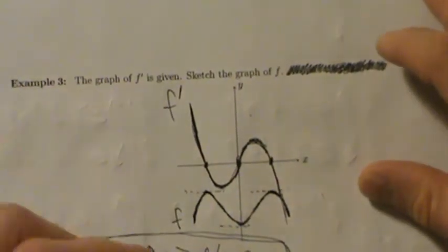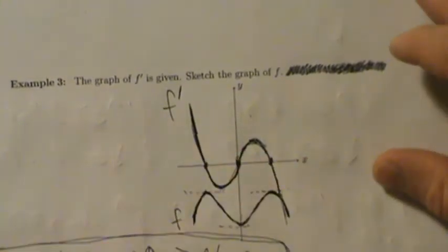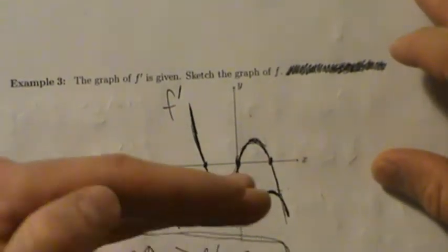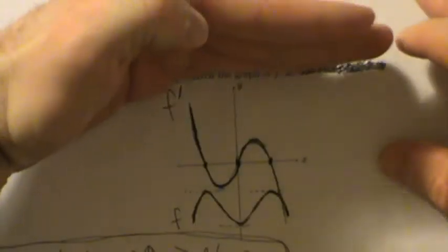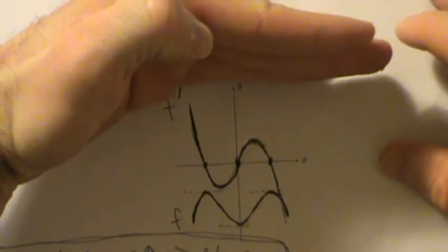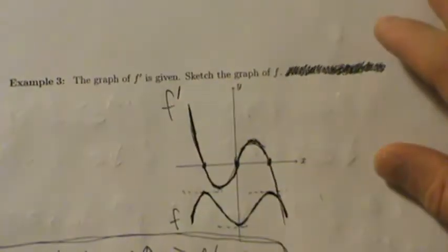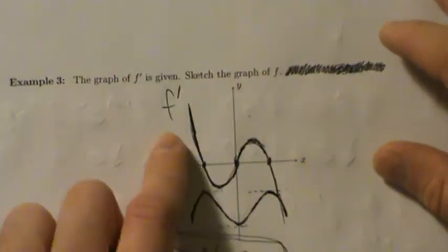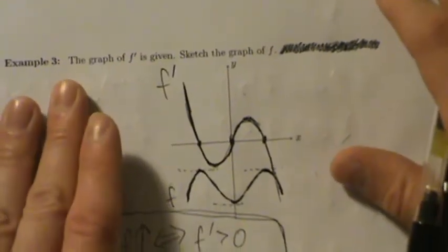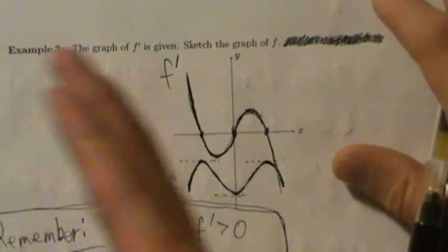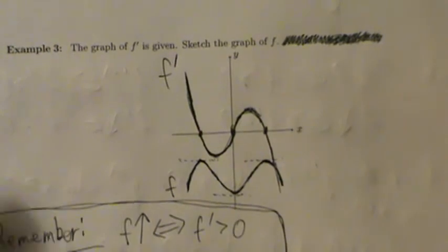The reason is because the derivative of any constant is 0, so we can take this graph of f and shift it vertically — add a big constant to it — and the derivative will still be the same. Because the derivative of any constant is 0. More about that later, once we start talking about integration and things like that.